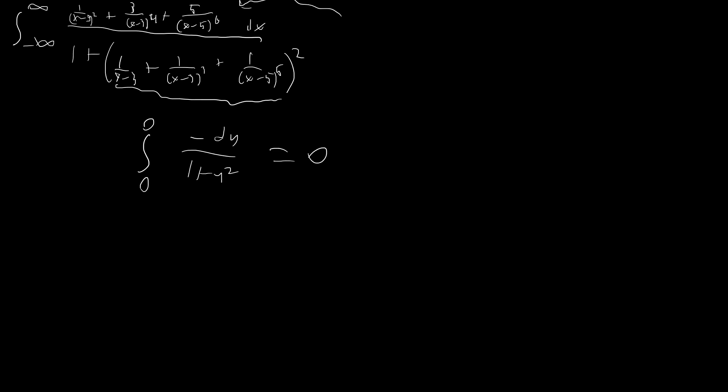We could finish the integral and plug in arctangent, but it's pretty clear this is just going to go to zero because we have the integral from zero to zero — that's not integrating over any area. Well, that's actually wrong. That's because we have to consider where our function is asymptotic, where it has jump discontinuities, and all different kinds of things like that.